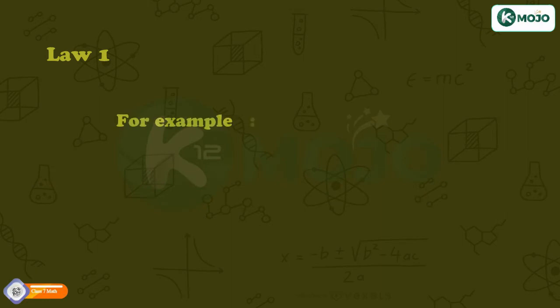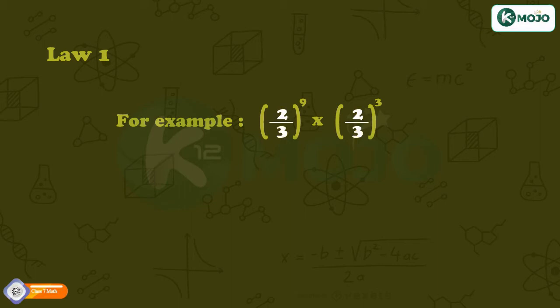For example, 2/3 raised to the power 9 into 2/3 raised to the power 3. Here, both have the same base 2/3 and their exponents are 9 and 3, which equals 2/3 raised to the power 12.